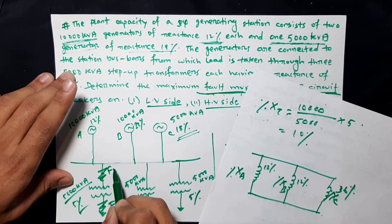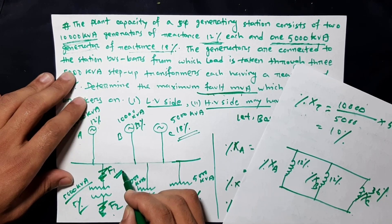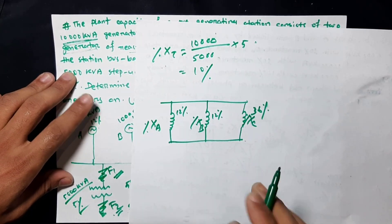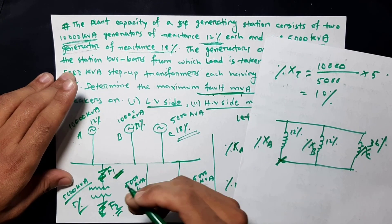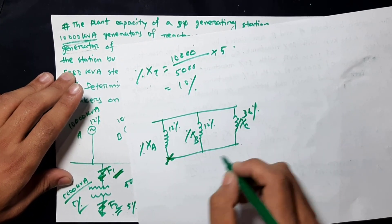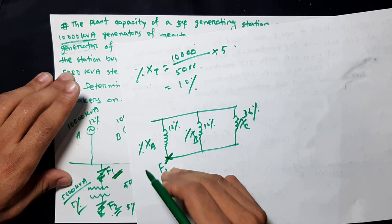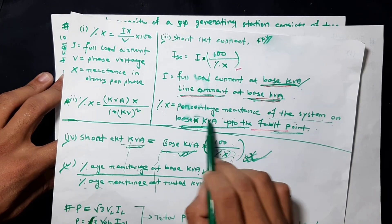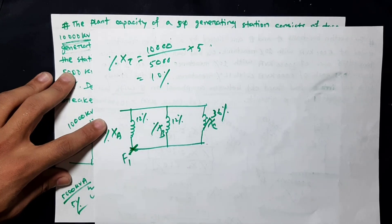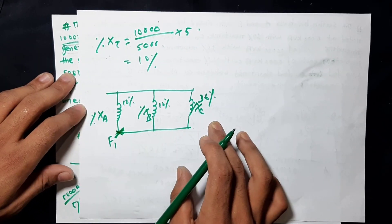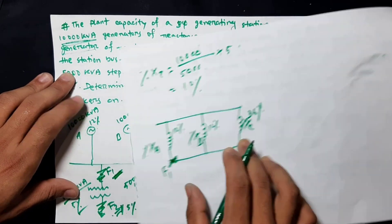F1 is the fault point and F2 will also be considered. The percentage of the system on base KVA up to the fault point — the fault point is the percentage of the system on base KVA, and the fault point equivalent is calculated accordingly.